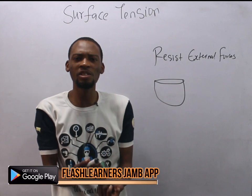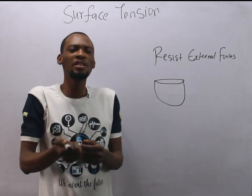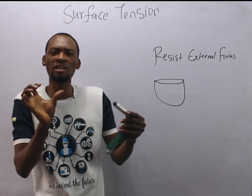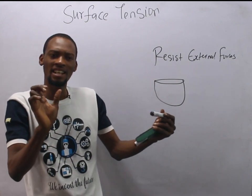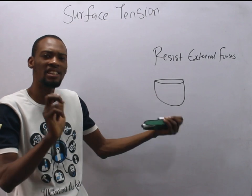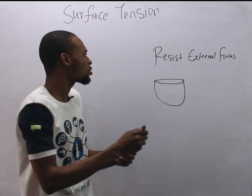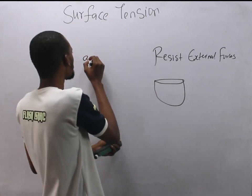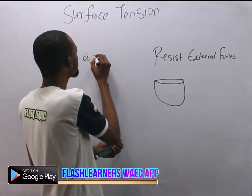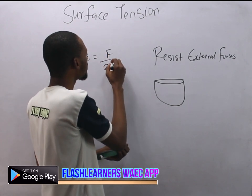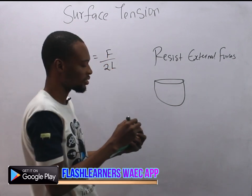Surface tension is simply the force per unit length acting on either side of a liquid at rest. So surface tension is equal to force over 2L.